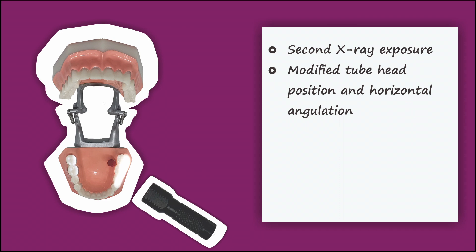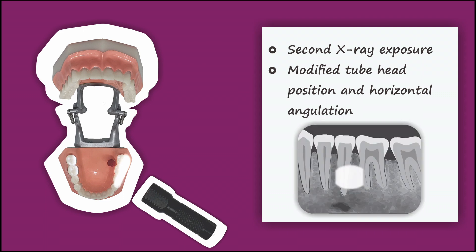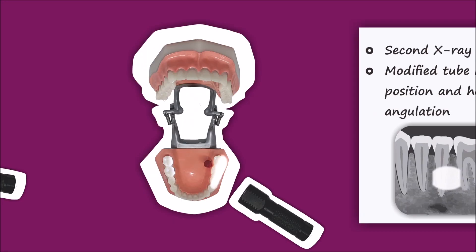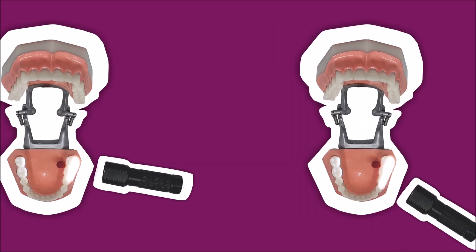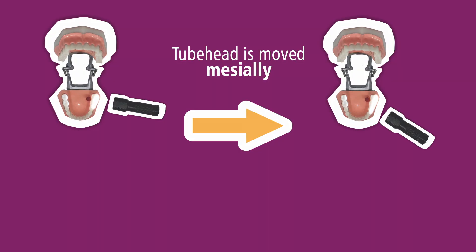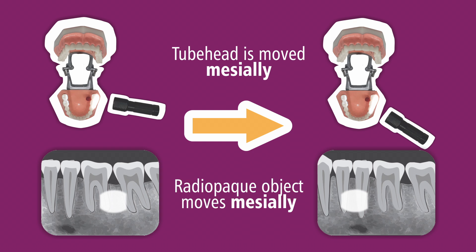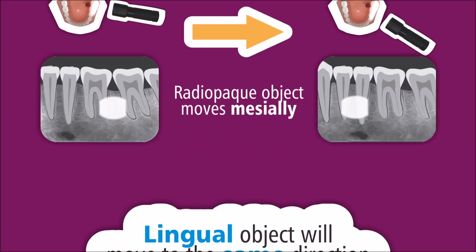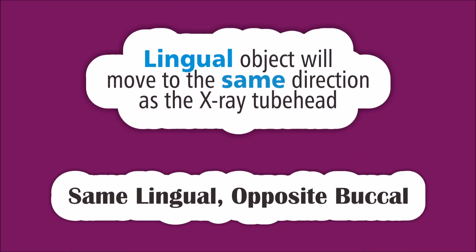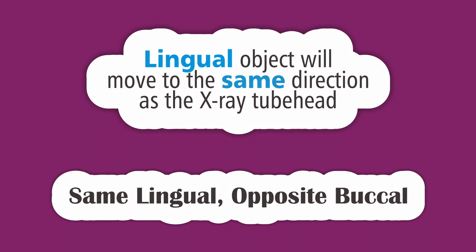For the second exposure, we modify the tube head position and the horizontal angulation, and we get a different image on the radiograph. The radiopaque object is now superimposed to the root of 35. To simplify: the tube head is moved mesially, and as a result, the radiopaque object also moves mesially. From this we conclude that a lingual object will move in the same direction as the x-ray tube head — this gives us the first phrase of the SLOB rule: Same Lingual.